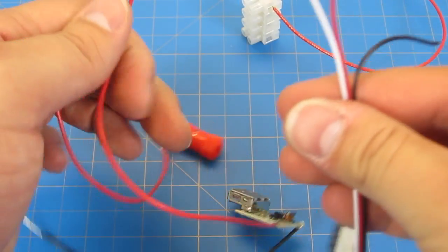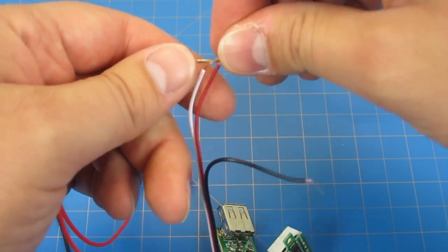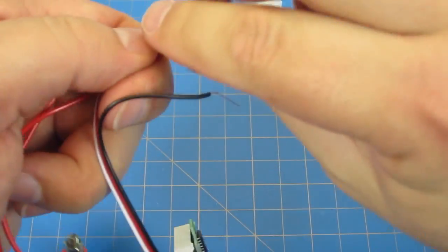Then grab the red and white wire off of your LED voltmeter and also twist those together nice and secure. Make sure they're all hooked up very well together.